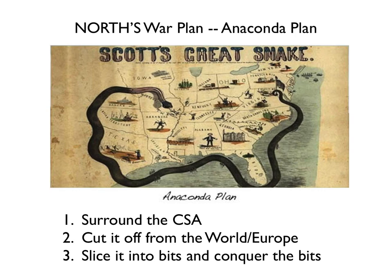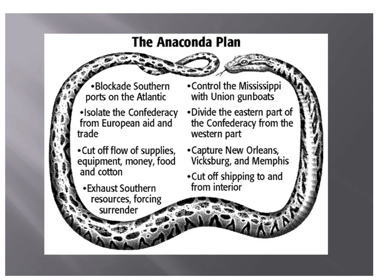Surrounding the Confederate States of America would cut it off from the world and Europe, and it would also allow the Union to slice it in pieces. Because one of the first things, as the snake began to contract, they would go down the Mississippi River and cut the Confederate States of America in two — a western half and an eastern half — so they wouldn't be able to help each other. You might want to pause and look at all the bullet points here that talk about how this Anaconda Plan is going to work, and note the important points about the Union's plan for the war.